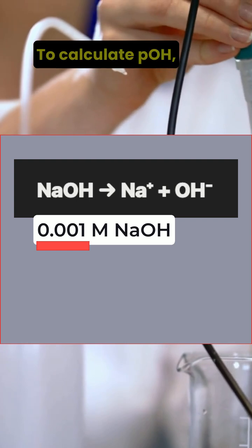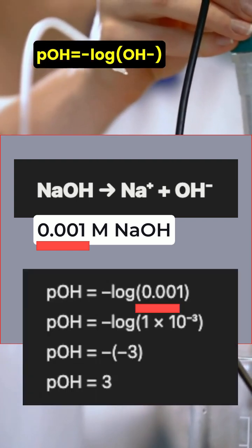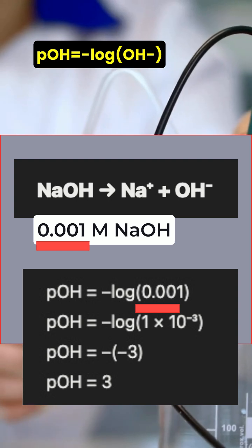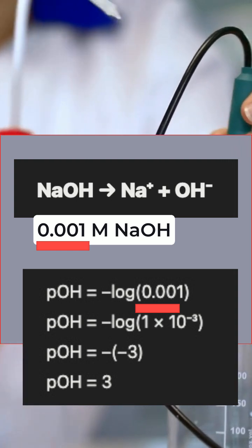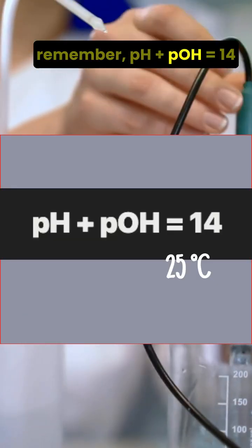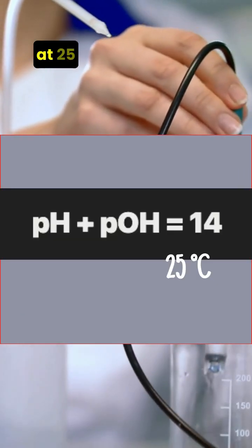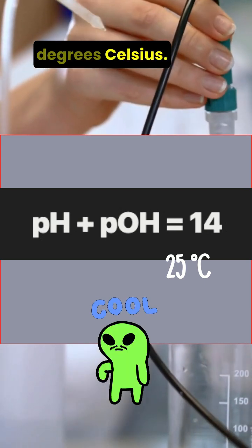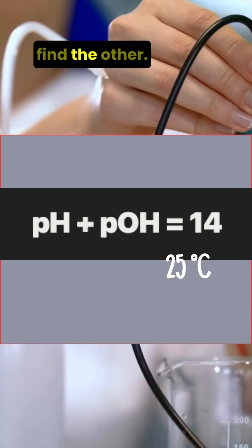To calculate pOH, the formula is pOH equals negative log of the OH- concentration. And here's the key relationship to remember: pH plus pOH equals 14 at 25 degrees Celsius. So if you know one value, you can easily find the other.